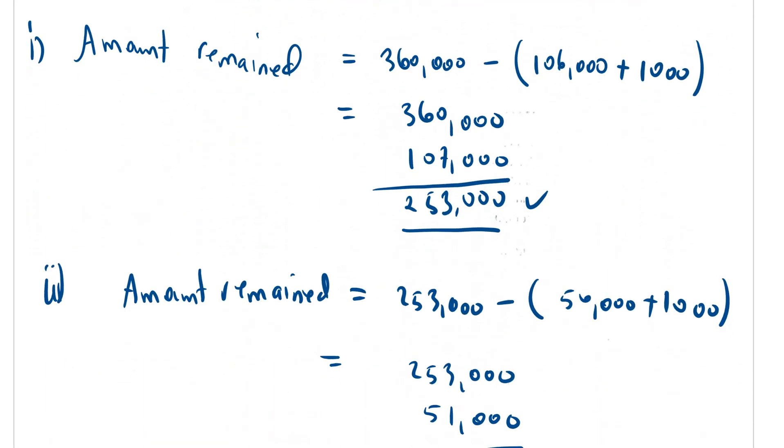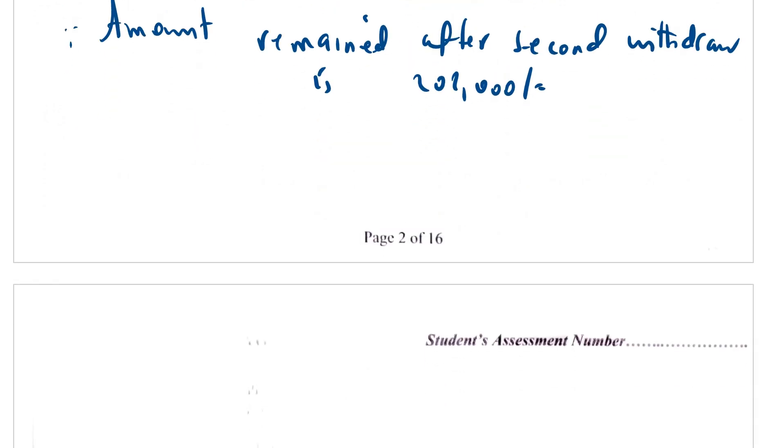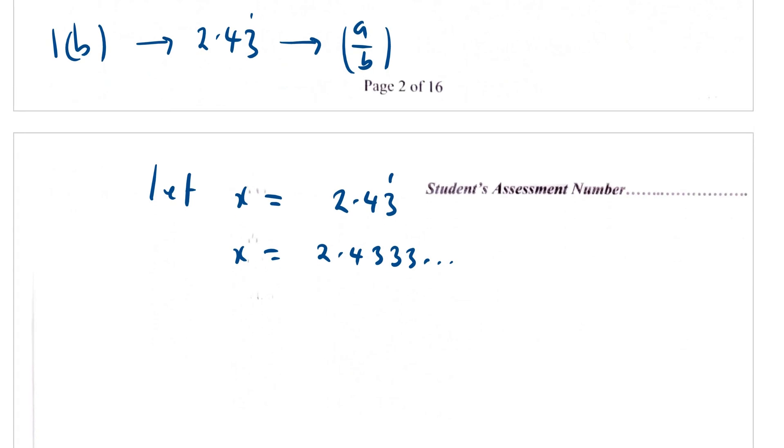Now going to question 1b, we are supposed to change 2.43 repeating into fraction as a mixed fraction. So procedure-wise, we are going to let x equal 2.43 repeating. So you can say this is 2.4333 continuing. Now you are going to multiply by 10 both sides, so you have 10x equals 24.3333.